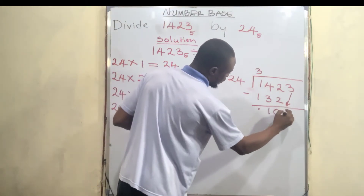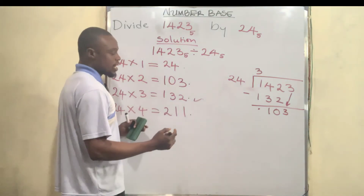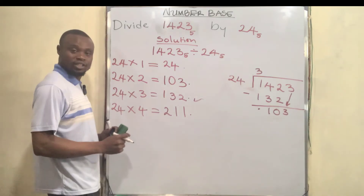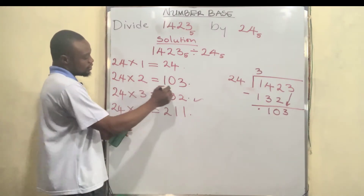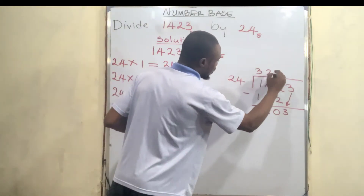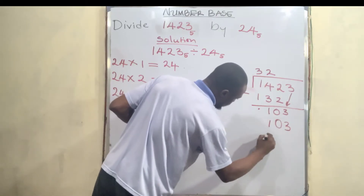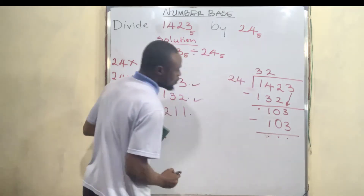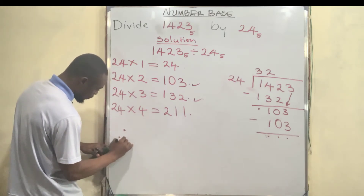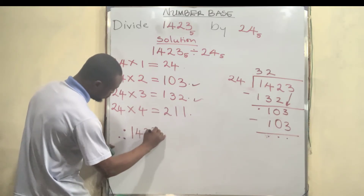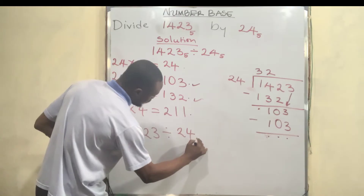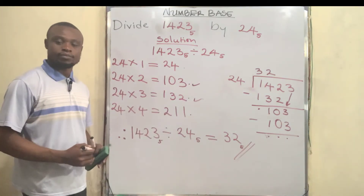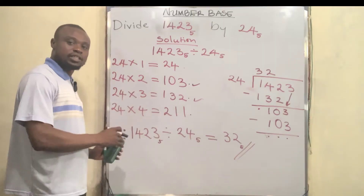Now we bring down the 3, giving us 103. What do we multiply by 24 to get exactly 103? That's 2 — because 2 multiplied by 24 is 103. So we write 2 up top, draw the line, subtract: one minus one is zero, zero minus zero is zero, and three minus three is zero. Therefore 1423 divided by 24, both in base 5, is equal to 32 base 5.